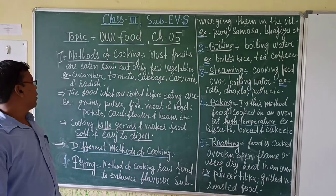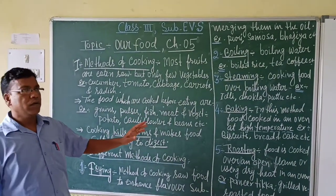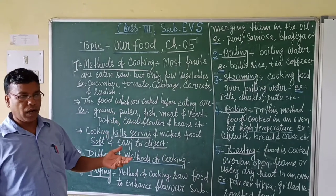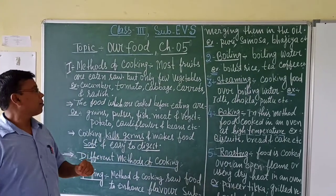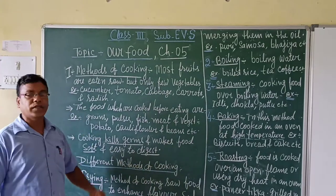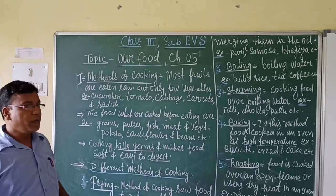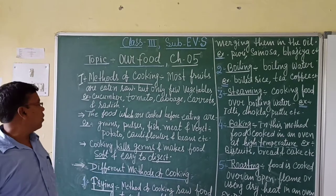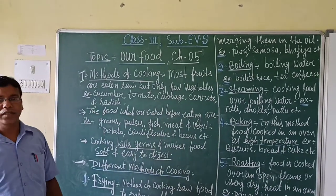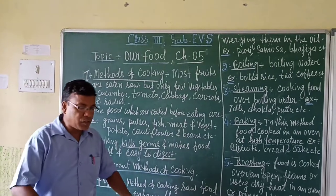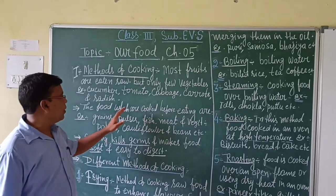Today we shall study the methods of cooking. First, we must know the food items which are eaten raw and some which are eaten after cooking. Most fruits are eaten raw. There are also some vegetables which can be eaten raw, like cucumber, tomato, cabbage, carrots, and radish. We eat these as a salad. These can be eaten raw.